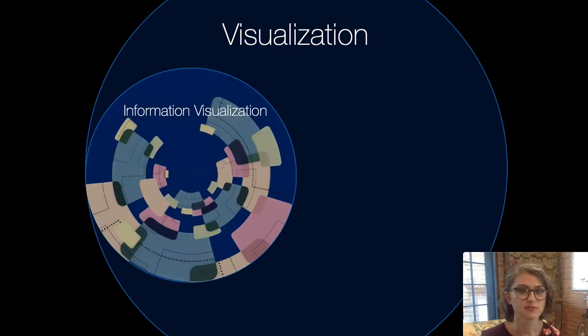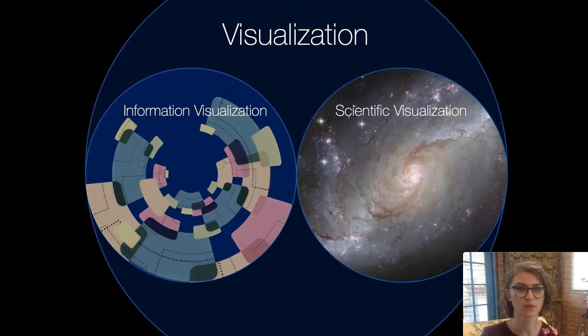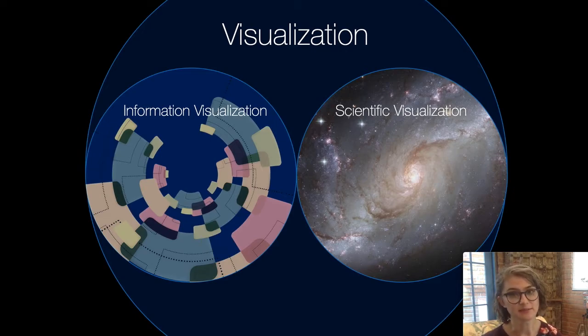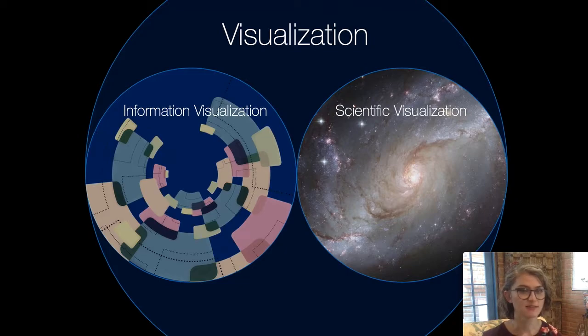The first is information visualization, which involves creating things like scatter plots, histograms, and networks in two dimensions that show relationships between data points. Then there's scientific visualization, which involves visualizing the 3D spatial nature of a data set. The positions of stars, the orbits of planets, the cosmic web, galaxies, things that have x, y, and z positions, or sometimes just x and y positions, and those positions are part of what gets visualized.